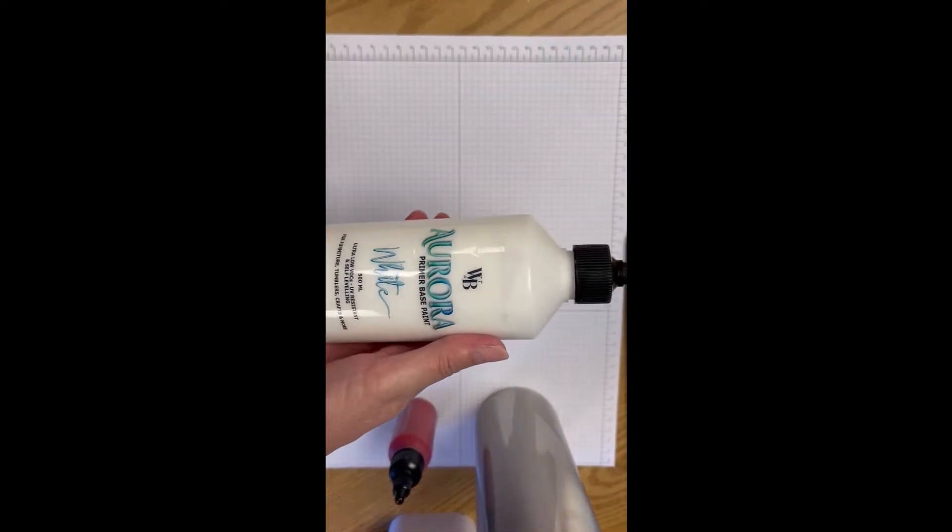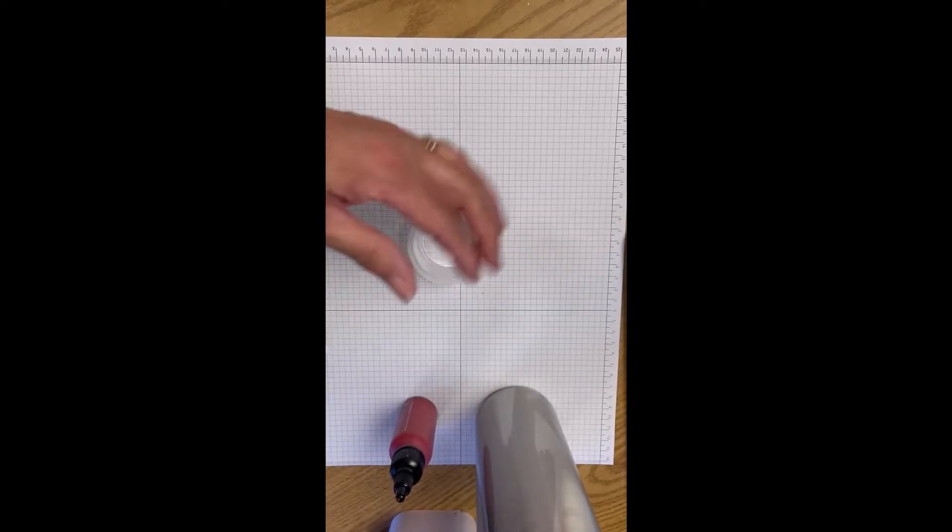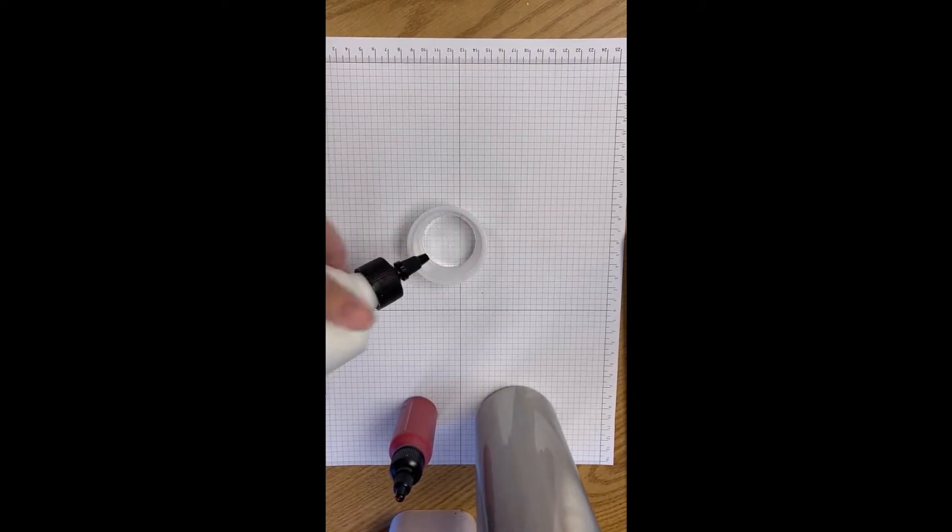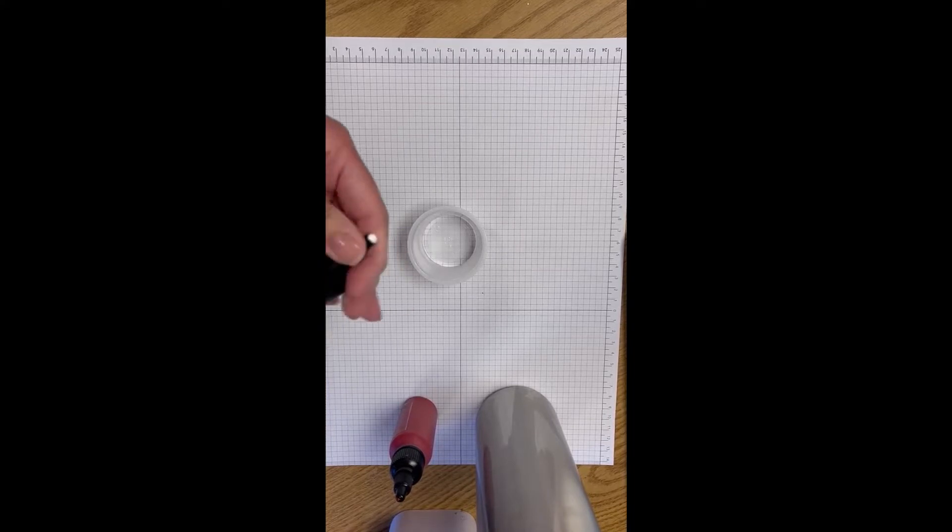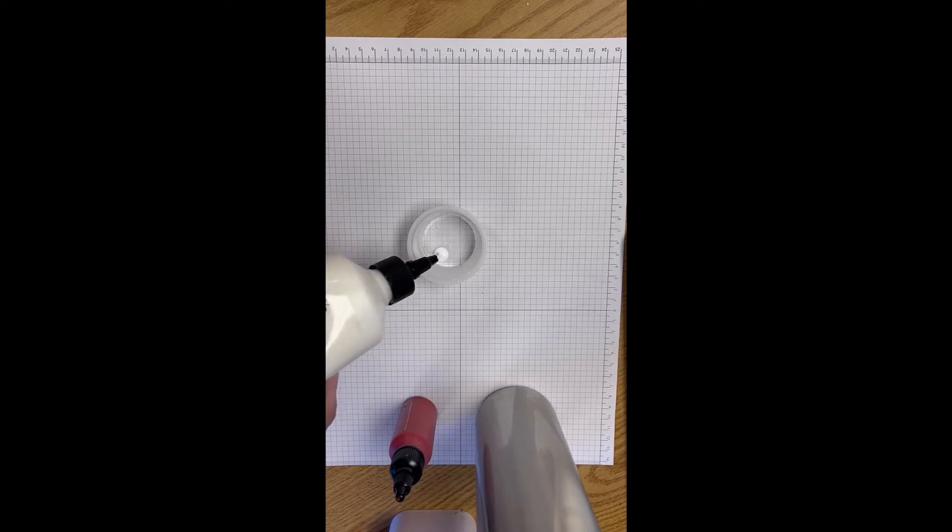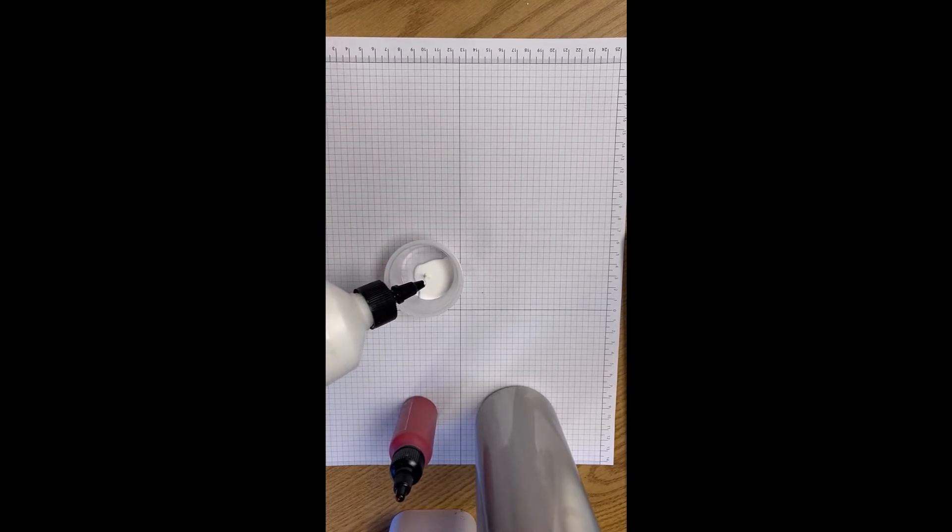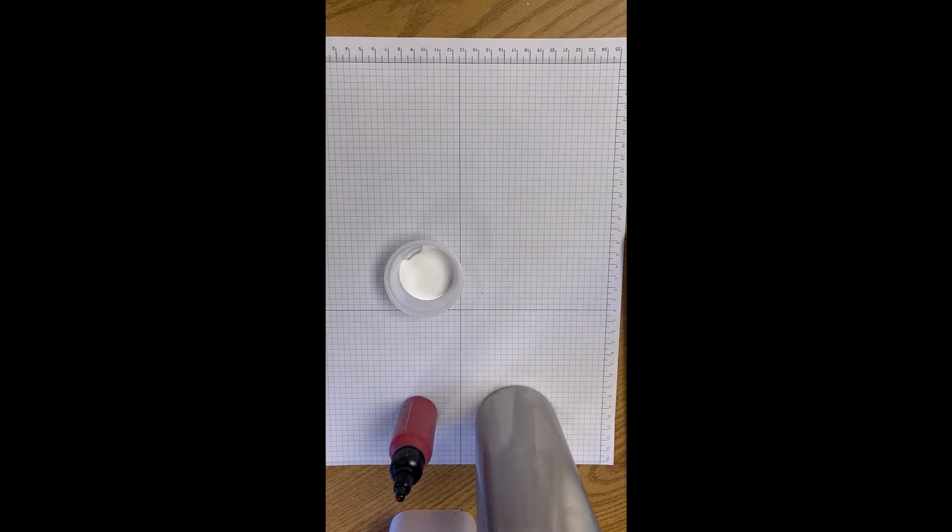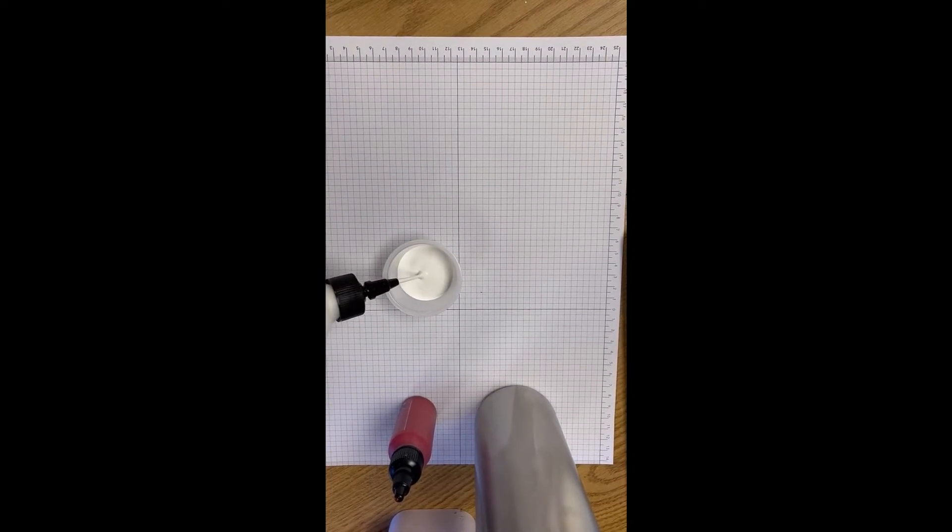So we'll start off first of all with our Aurora primer base paint. I use a cup for mixing and I'm going to squeeze some into a cup here. You don't need too much.